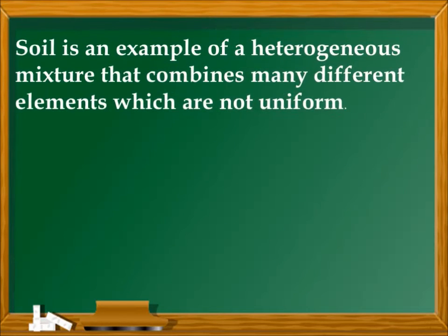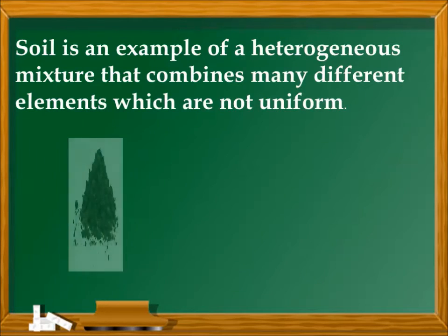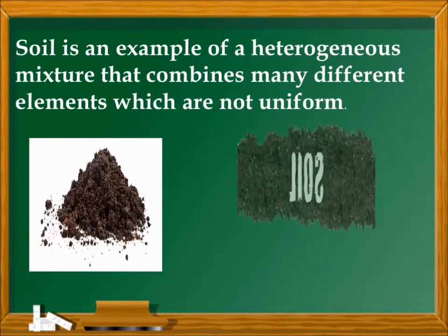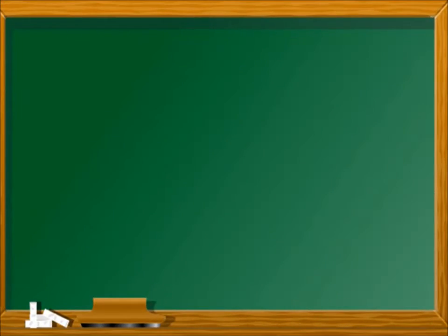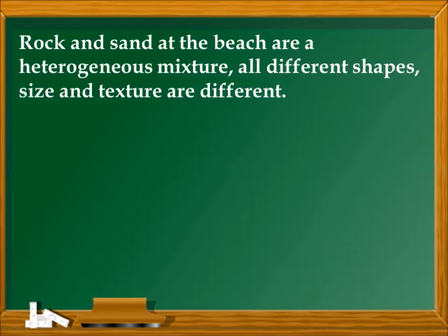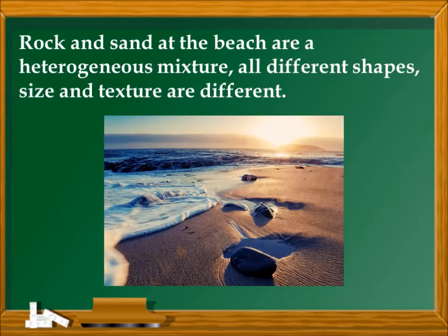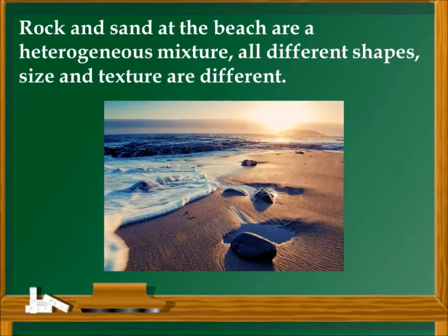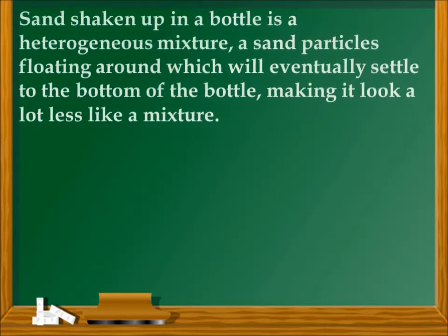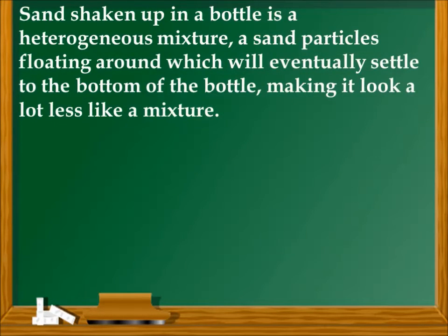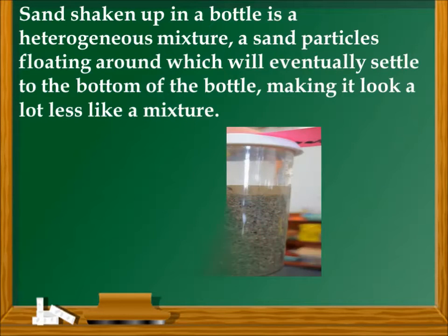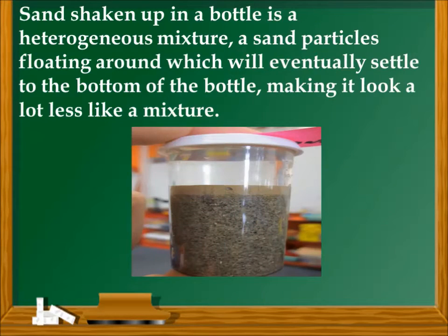Soil is an example of a heterogeneous mixture that combines many different elements which are not uniform. Rock and sand at the beach are a heterogeneous mixture — all different shapes, sizes, and textures. Sand shaken up in a bottle is also a heterogeneous mixture, as sand particles float around and will eventually settle to the bottom.